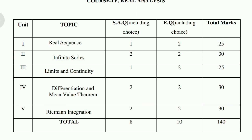From these 3 chapters you get 6 short questions — 2 from Infinite Series, 2 from Differentiation and Mean Value Theorem, and 2 from Riemann Integration. Attempting 5 out of 6 short questions gives you 25 marks, and the essays add 30 more, totaling 55 marks — well above passing marks. This strategy makes it very easy to score.